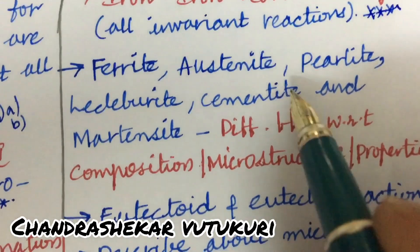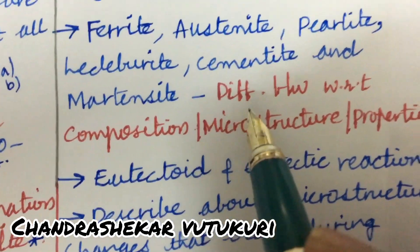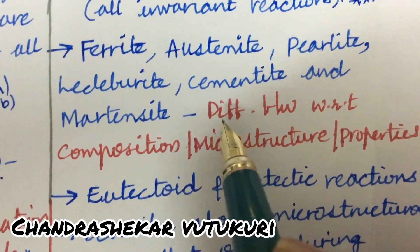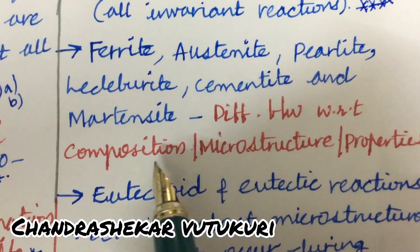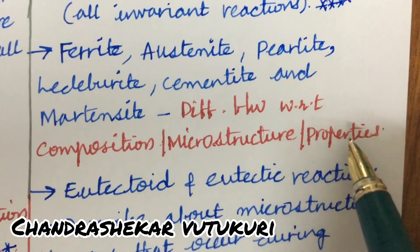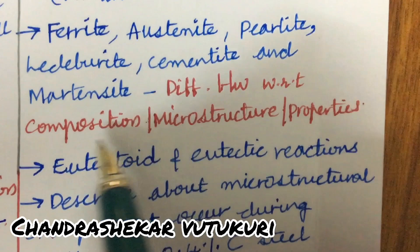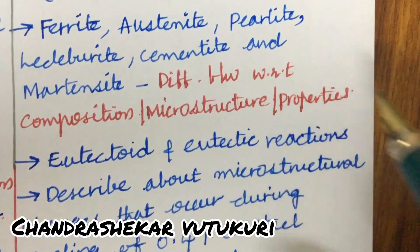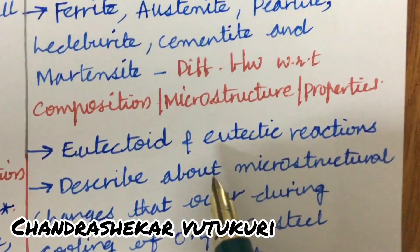Ferrite, austenite, pearlite, as well as all remaining materials — know the differences with respect to composition, microstructure, and properties. I hope you are working out all the properties; microstructures need to be drawn only in pencil.